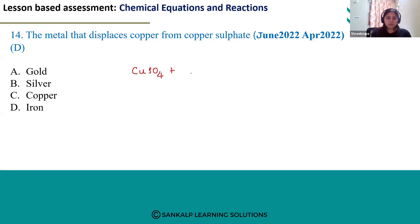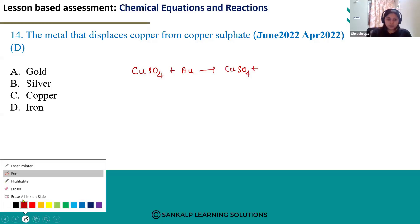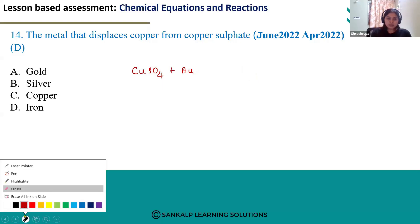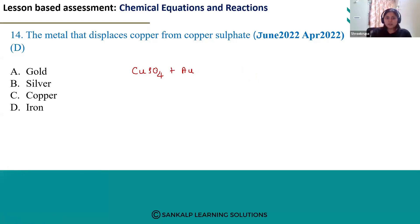When you take gold, that is Au, we can observe CuSO4 will be the product because gold cannot displace copper from copper sulphate solution. Since the reactivity of gold is less than the reactivity of copper, gold cannot displace copper from its solution.